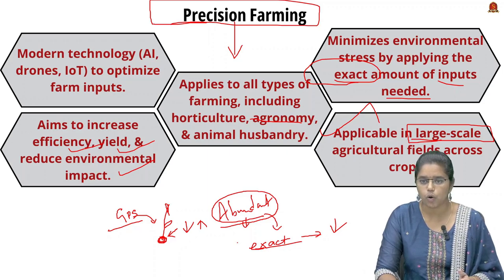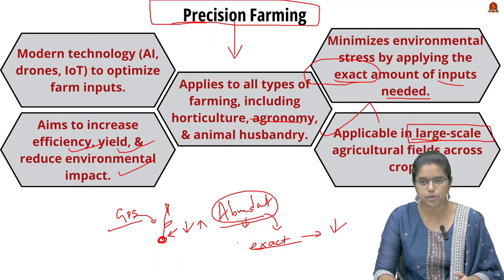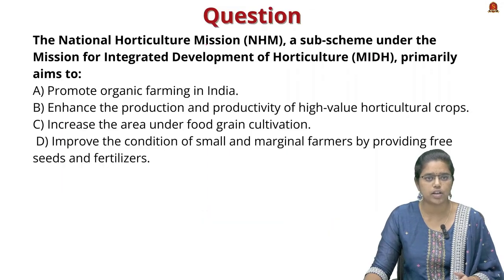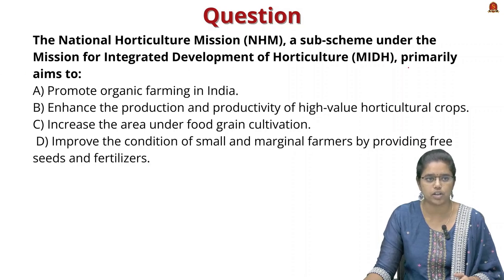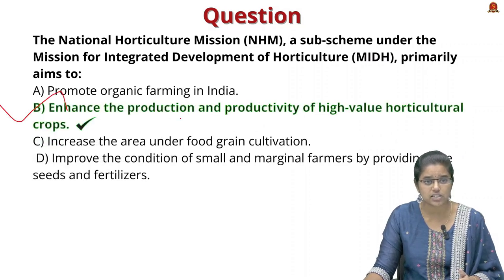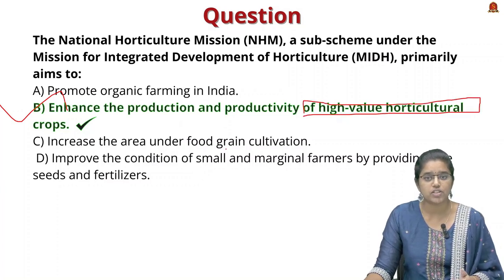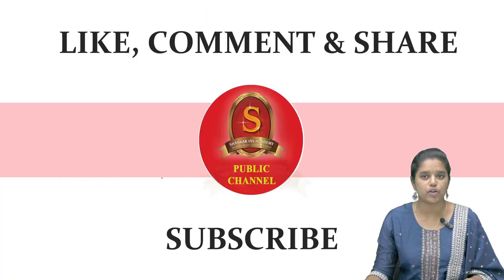In this discussion, we covered horticulture, the Mission for Integrated Development of Horticulture, and precision farming with its advantages. A prelims question: the National Horticulture Mission, a sub-scheme under MIDH, primarily aims to — the correct answer is B — enhance the production and productivity of high-value horticulture crops. If you found the video informative, please like, comment, and subscribe. Thank you and have a nice day.